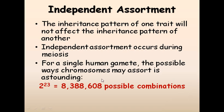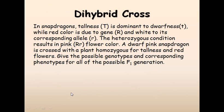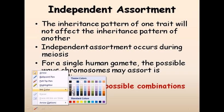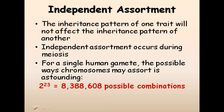For a single human gamete, the possible ways chromosomes can assort is 2 to the power of 23, because humans have 23 sets of chromosomes. If we are talking about two different traits, the number of possible combinations is correspondingly huge — showing how complicated these matters really are.